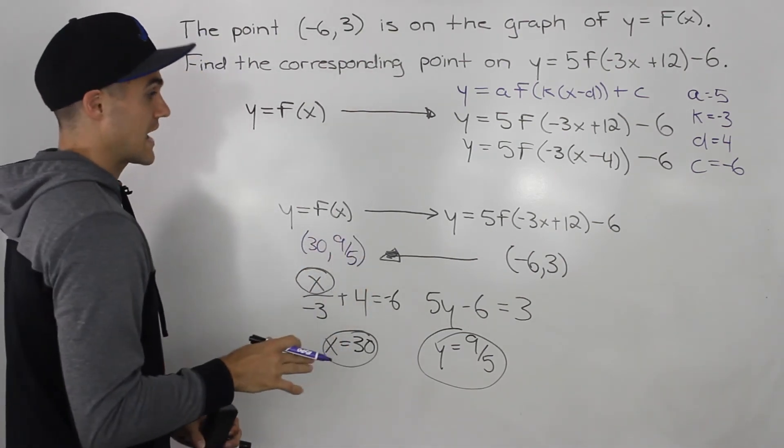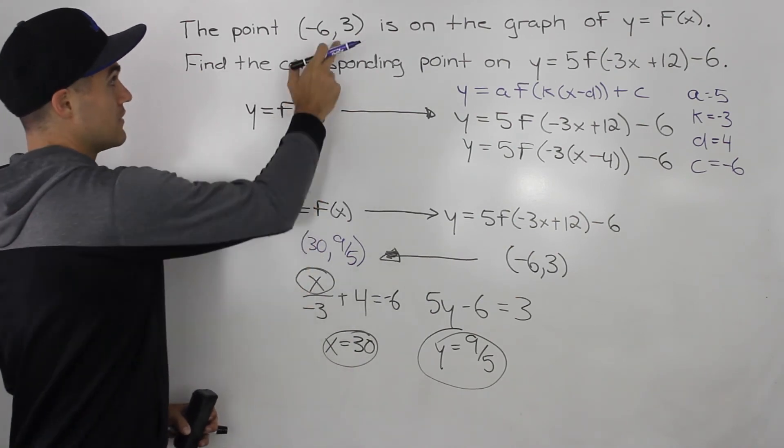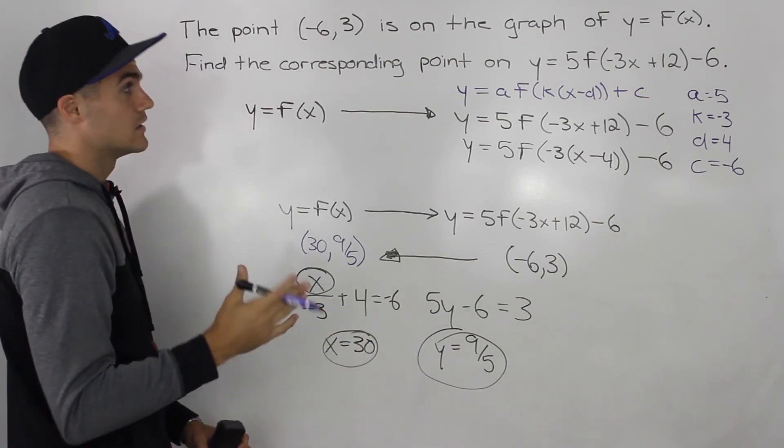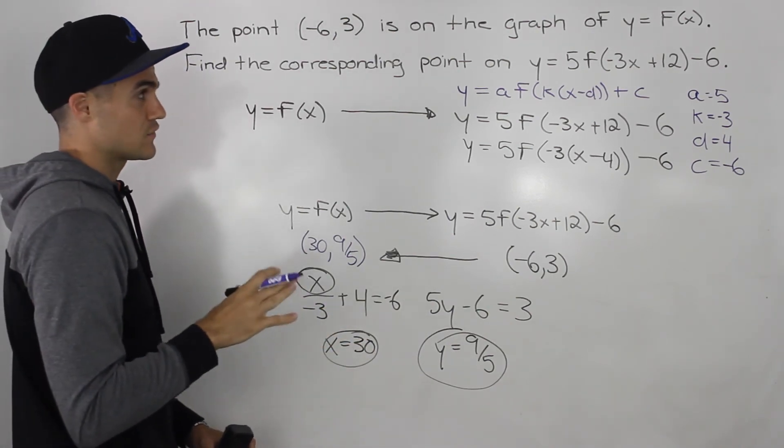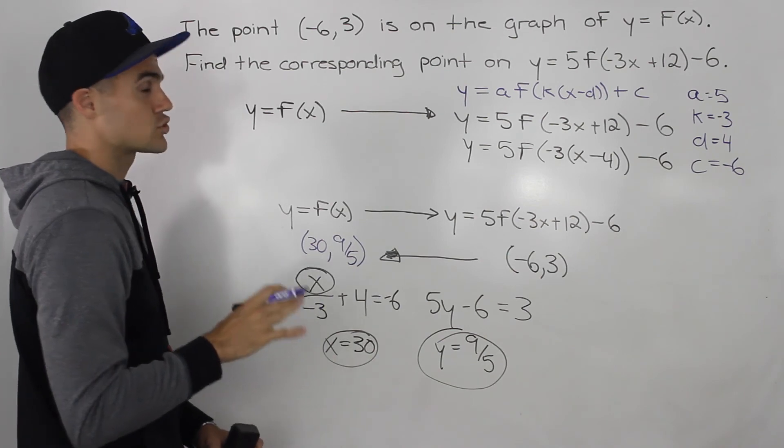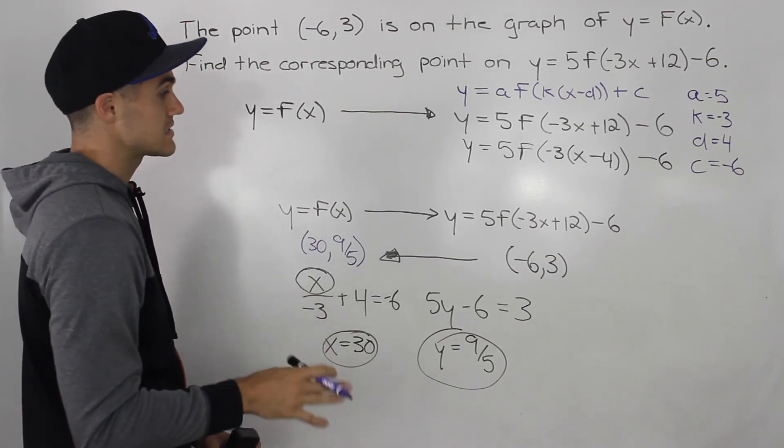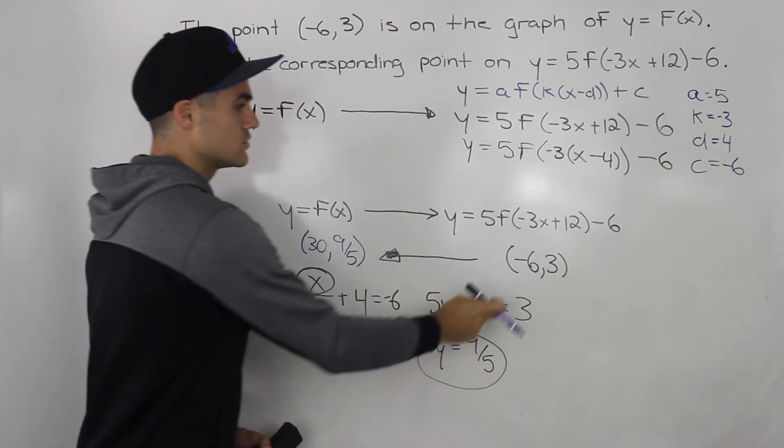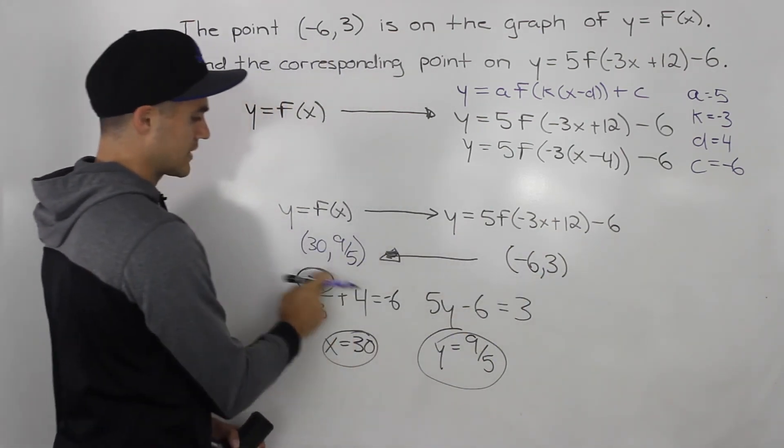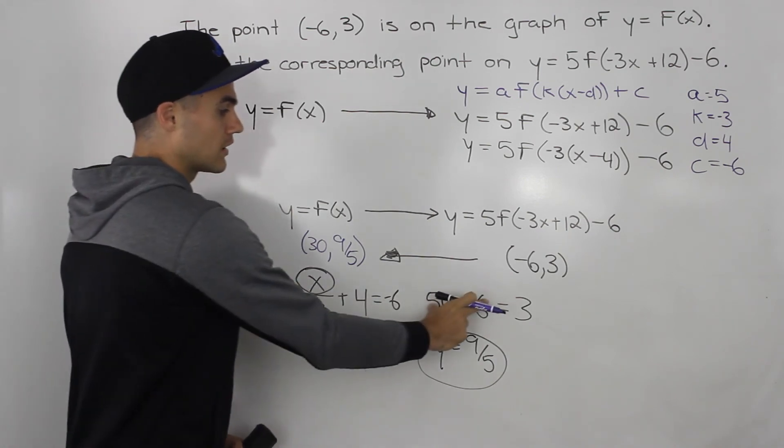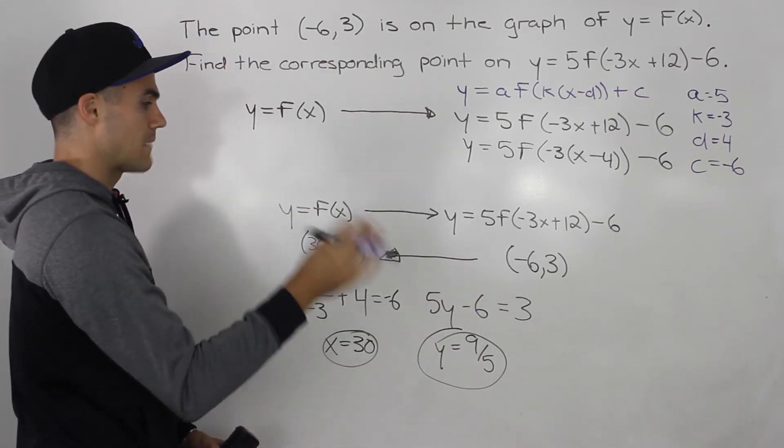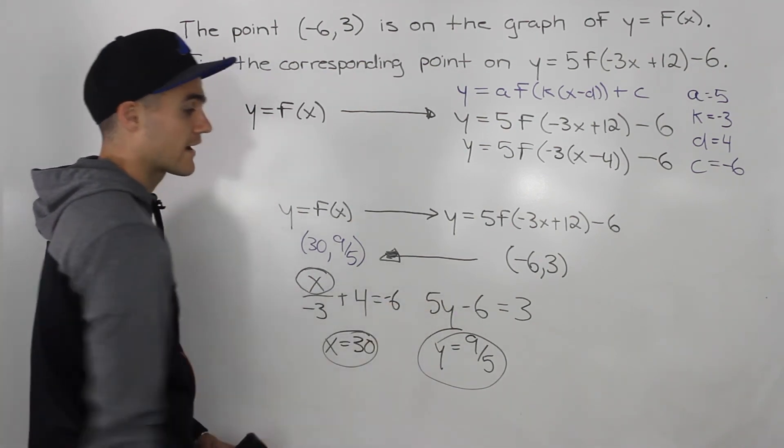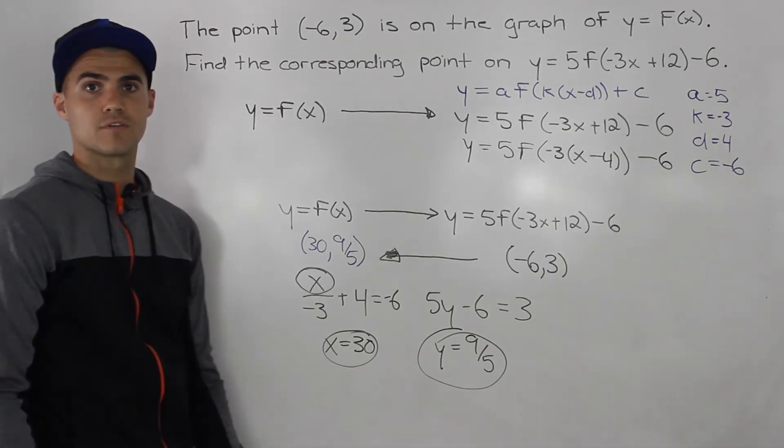However, that's not what this question was asking for. This point was on the parent function, then we had to find the transform point. But just be aware, some questions, if your teacher wants to be a little bit more tricky and tough on the test, they'll give you the point on the transform function, you have to go backwards. All you do is you make that x and y coordinate equal to the actual formula, the mapping formula for both the x and y values, and then you solve for the original x and y's, and you get it on the parent function.